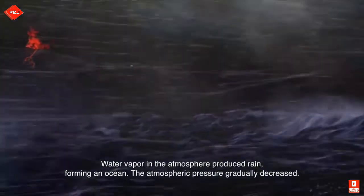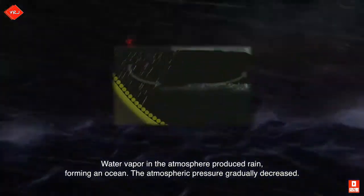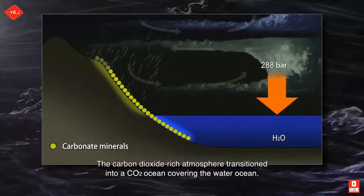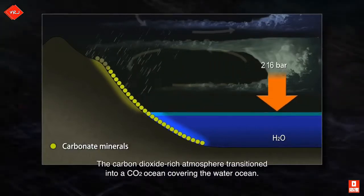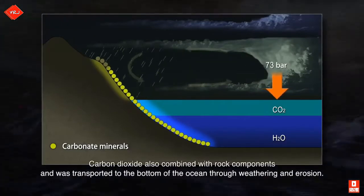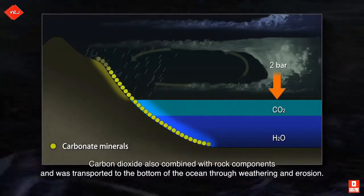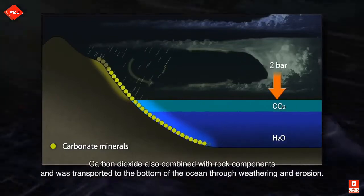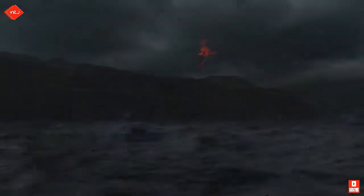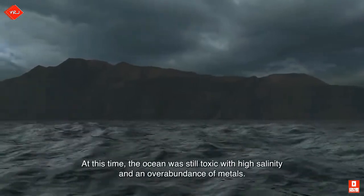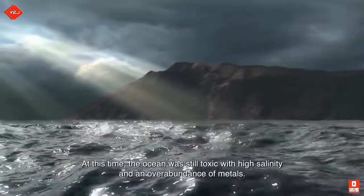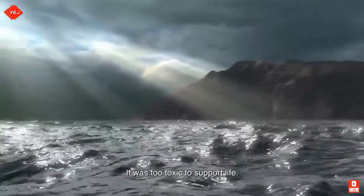Water vapor in the atmosphere produced rain, forming an ocean. The atmospheric pressure gradually decreased. The carbon dioxide-rich atmosphere transitioned into a CO2 ocean covering the water ocean. Carbon dioxide also combined with rock components and was transported to the bottom of the ocean through weathering and erosion. At this time, the ocean was still toxic with a high salinity and an overabundance of metals — it was too toxic to support life.